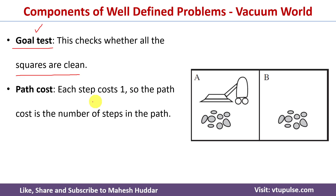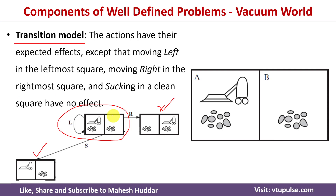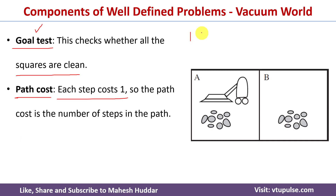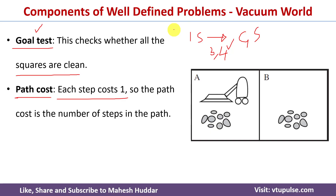The last component is path cost. Each step cost has a value of one — whenever we perform any action, that costs one unit. For example, moving from one state to another via the right action has a path cost of one. The total path cost is the number of actions performed from the initial state to reach the goal state. If we apply three actions to reach the goal, the total path cost equals three; four actions means a path cost of four. This is how the vacuum world example is formally defined in artificial intelligence.